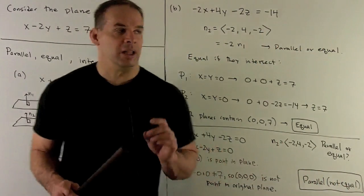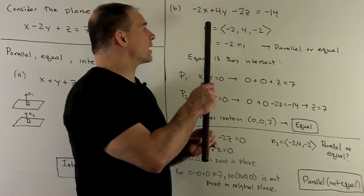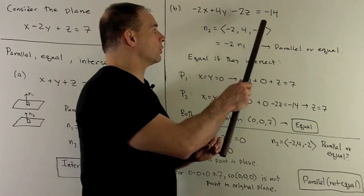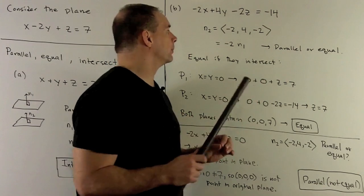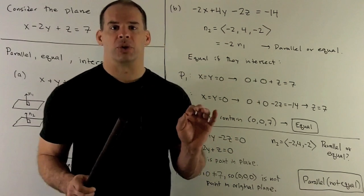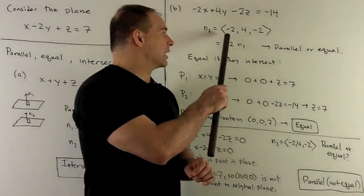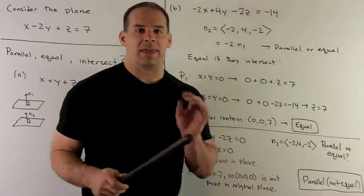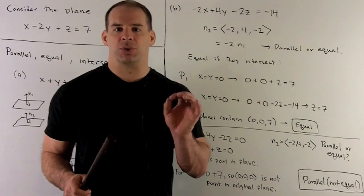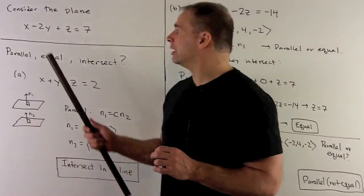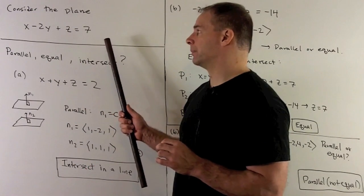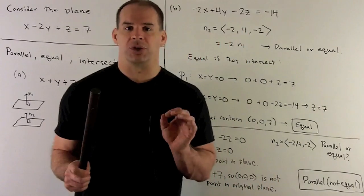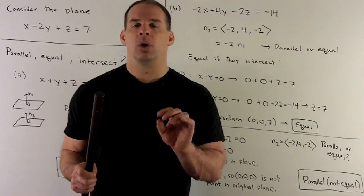Next plane. Let's try minus 2x plus 4y minus 2z equals minus 14. Here we peel off the normal direction. We get minus 2, 4, minus 2, and then we note that's just going to be minus 2 times the normal direction of our original plane. So that's going to mean our planes are either parallel, not equal, or equal.